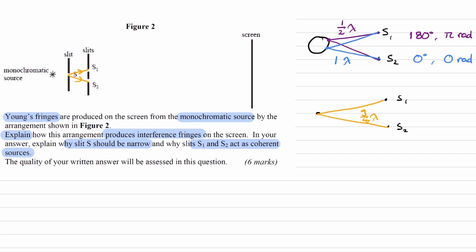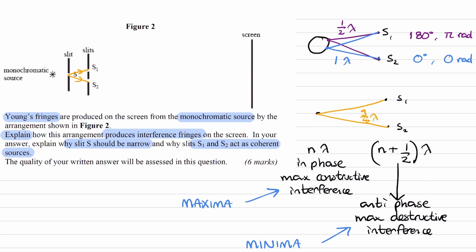When the path difference is n lambda, this is the condition for maximum constructive interference — the two waves are in phase, giving bright fringes (maxima) on the screen. When the path difference is (n + 1/2) lambda — for example, half lambda, one and a half lambda, two and a half lambda — you have maximum destructive interference; the waves are in antiphase and you get dark fringes (minima) with very little light.